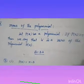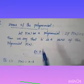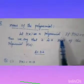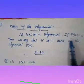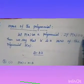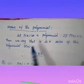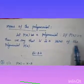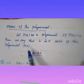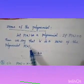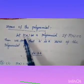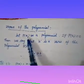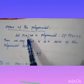Zeros of the polynomial: let p of x be a polynomial. If p of a equals zero, then we say that a is a zero of the polynomial p of x.